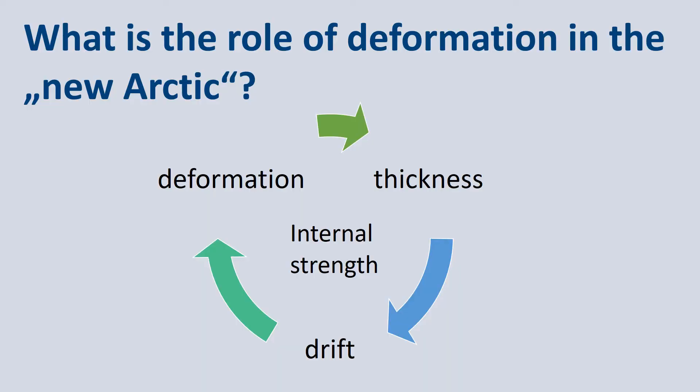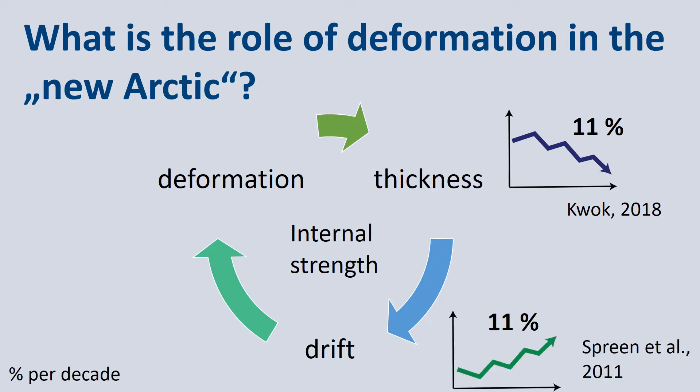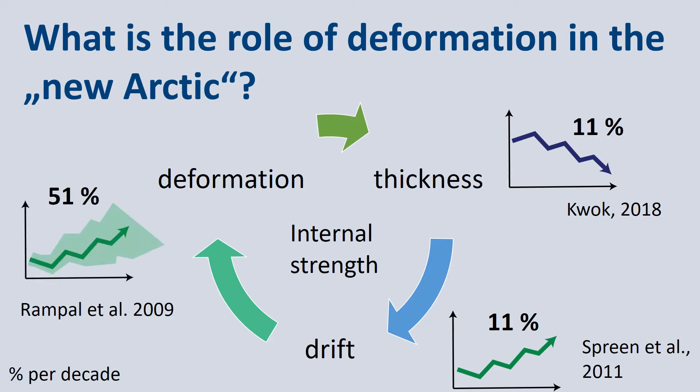The big question is: what will the role of deformation be in the new Arctic? To understand that, we need to consider that CIS thickness, drift, and deformation are strongly interlinked through the internal strength of the ice pack. If one property changes — as thickness is known to thin — the others probably change as well. We've observed that drift speed increased along with deformation rates. But what we don't know is whether this enhanced deformation will also lead to a thicker ice cover, or whether there are other effects such as strongly enhanced lateral melt at a more fractured ice cover.